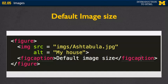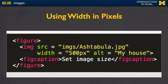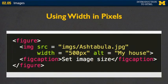Let me walk through the options. The first is to just use the default image size — I have my image tag with the two required attributes: source, where you can find the picture, and the alternate text. The next option is to use width in pixels. I've added the width attribute and hard-coded it to 500 pixels. You might notice I've only set the width and not the height — that's okay. The browser will automatically figure out how much to adjust the height so it stays proportional.